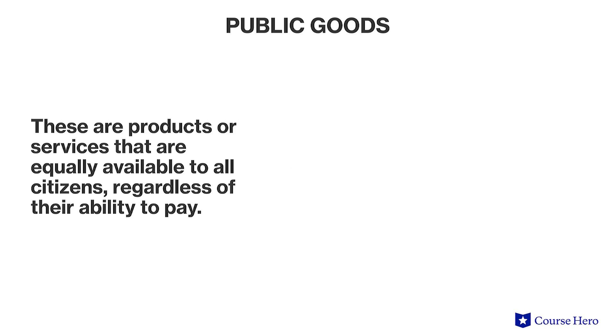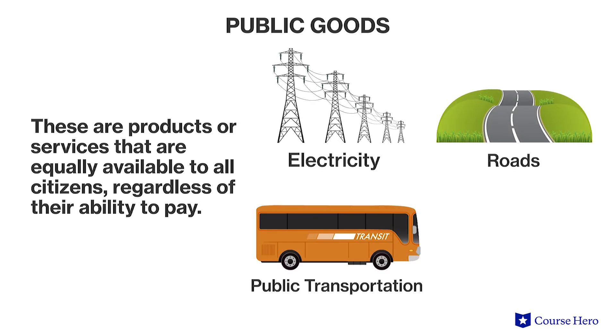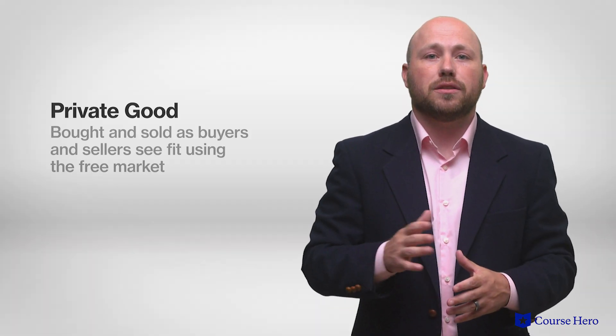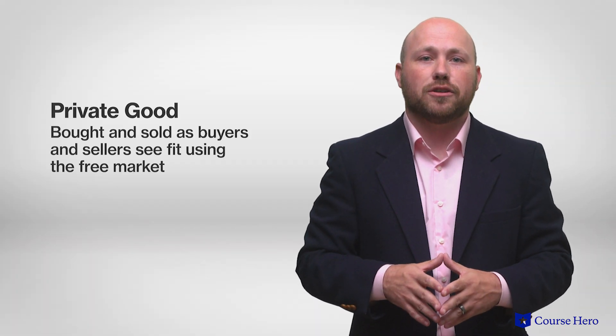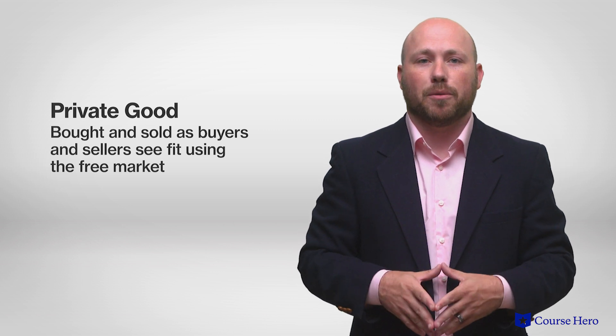A public good is a product or service that is equally available to all citizens regardless of their ability to pay. In contrast, a private good is bought and sold as buyers and sellers see fit using the free market. Public goods are usually, but not always, paid for by the government using money provided by taxes.